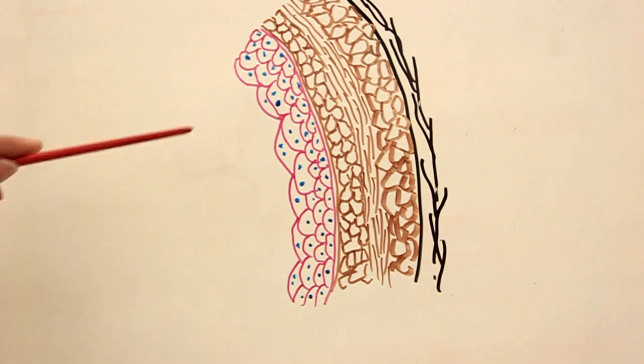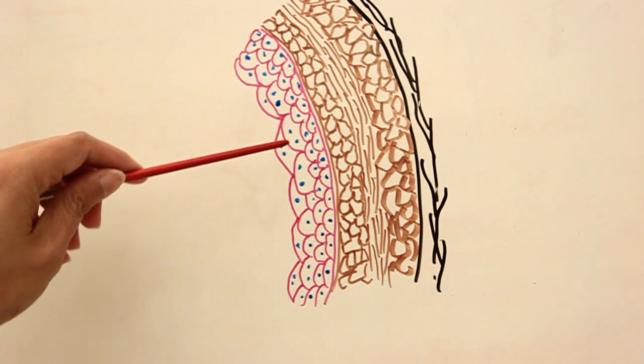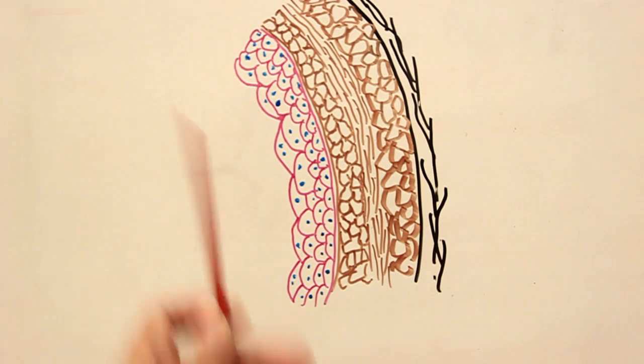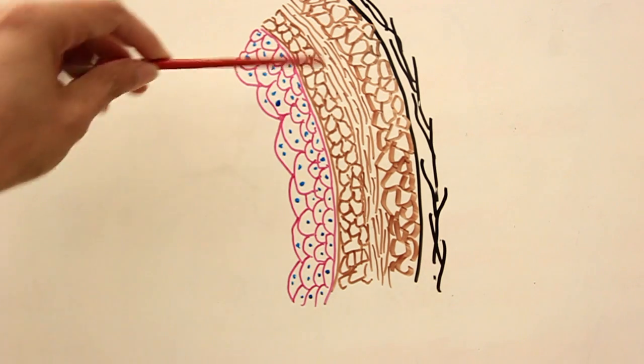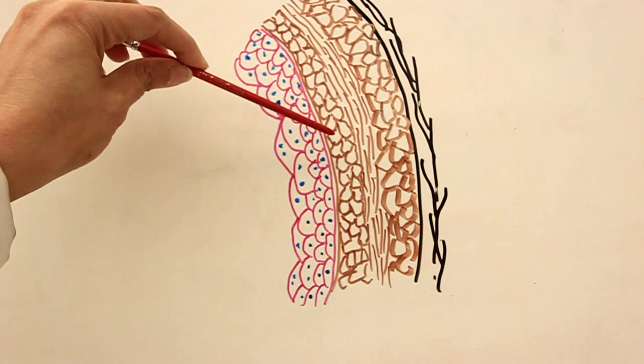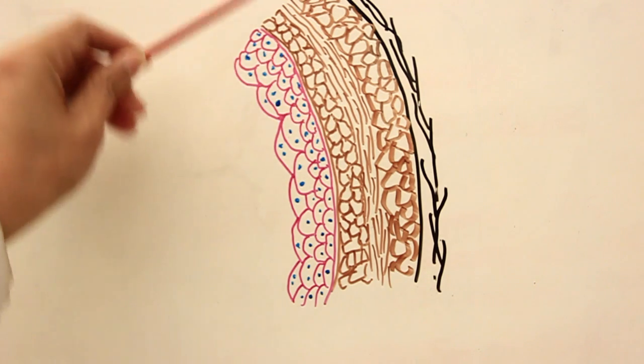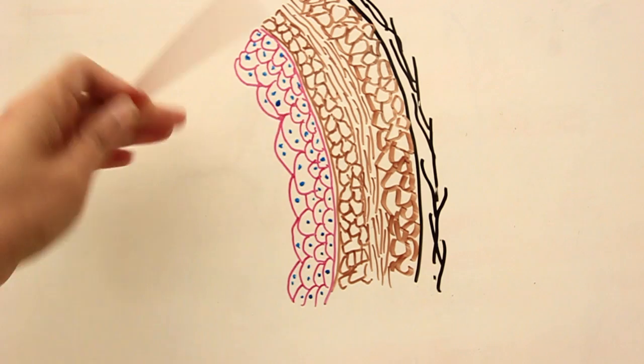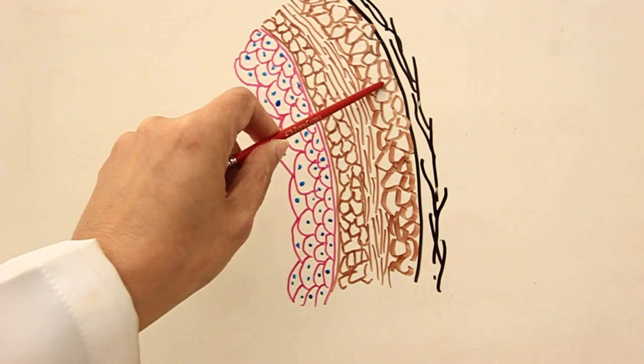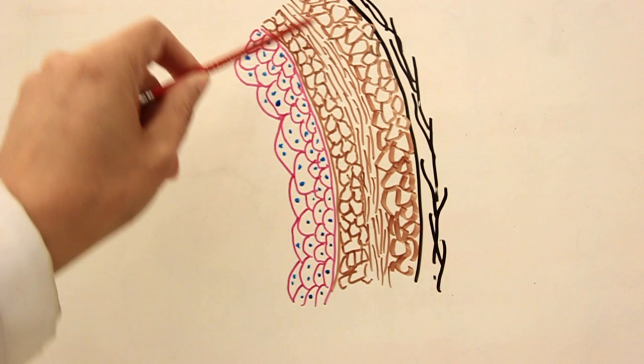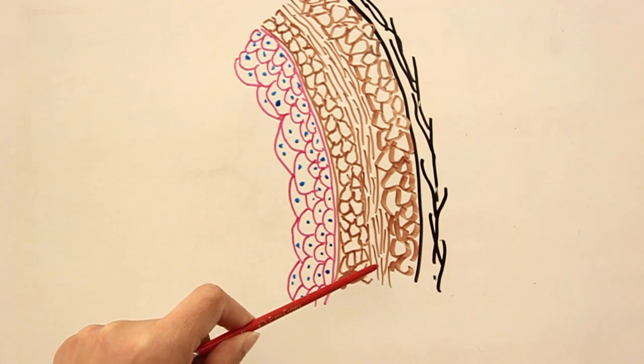Detrusor means to thrust off or thrust out. We know that the bladder is a temporary reservoir for urine and it has to thrust it out. The detrusor muscle is a huge collection of smooth muscle, involuntary in nature. The muscles are arranged in this fashion: outer and inner longitudinal and middle circular fibers.